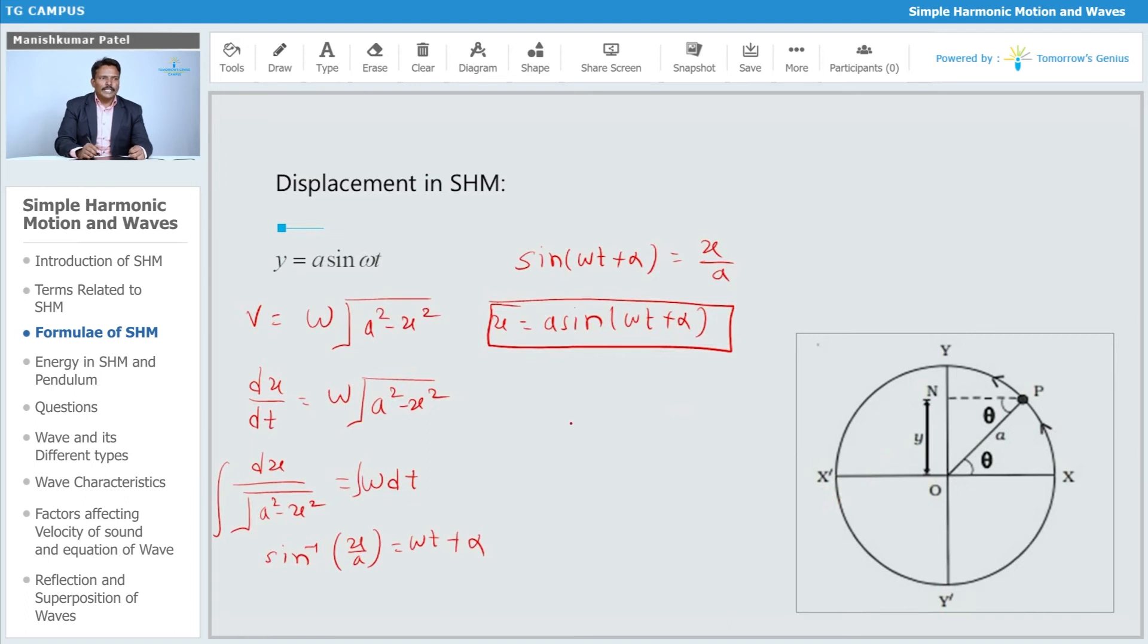This is how you can get the expression. From this case also, you can say that sine of omega t is equals to y upon a. So y is equals to a sine omega t or you can write it down in terms of x also, x is equals to a sine omega t.